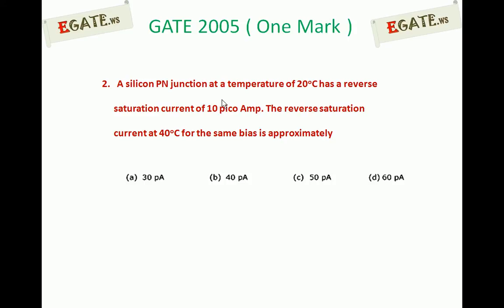A silicon p-n junction at a temperature of 20 degrees centigrade has a reverse saturation current of 10 pico amperes. The reverse saturation current at 40 degrees centigrade for the same bias is approximately: (a) 30 pico amperes, (b) 40 pico amperes, (c) 50 pico amperes, (d) 60 pico amperes.